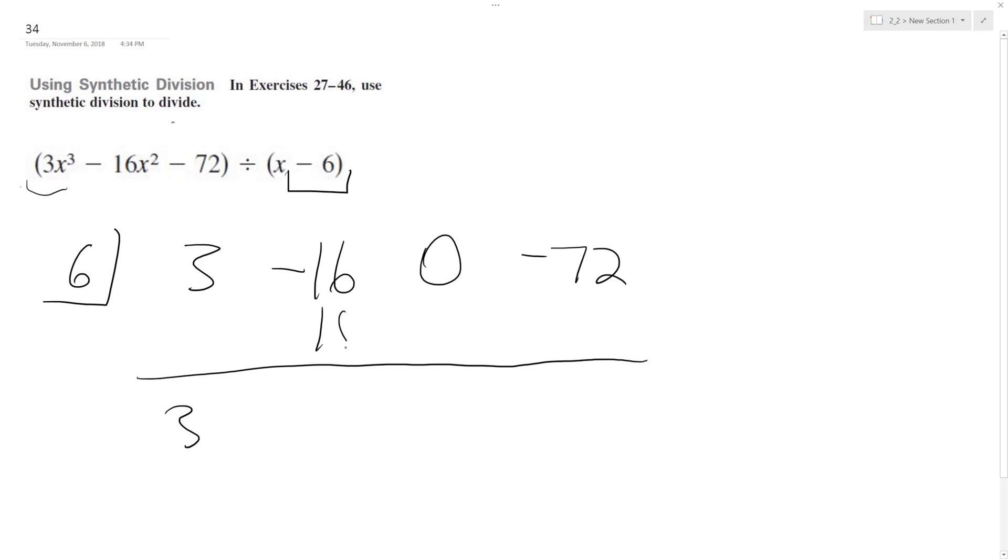It's going to be positive 18 because 6 times 3, I get 2, 12, 12, and then 12 times 6, 48 plus 24, 60, 72. So there's no remainder.